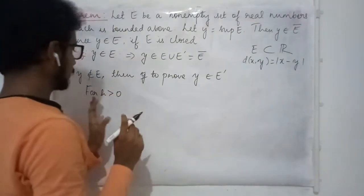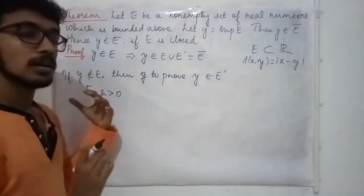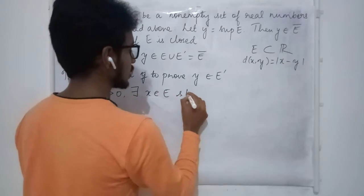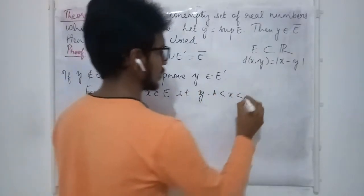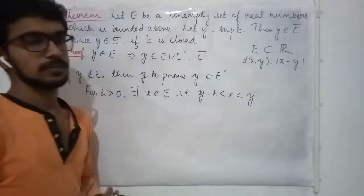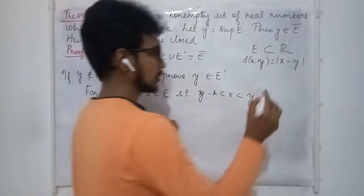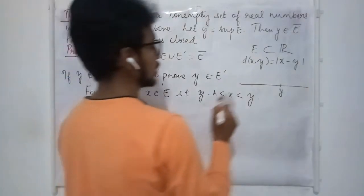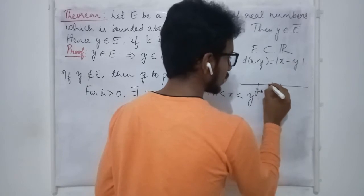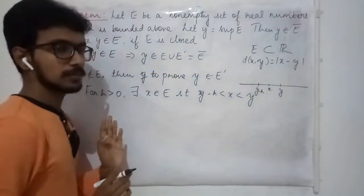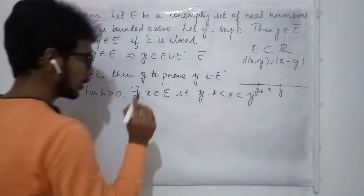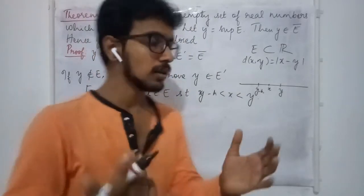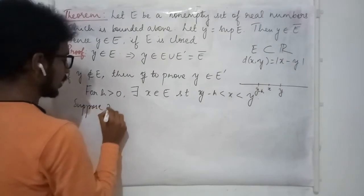To prove y is a limit point, consider: for every h greater than zero, there exists x in E such that y minus h is less than x, which is less than y. On the real line, choose some positive h so that y minus h is a point, and in between there exists at least one x which is a member of E.